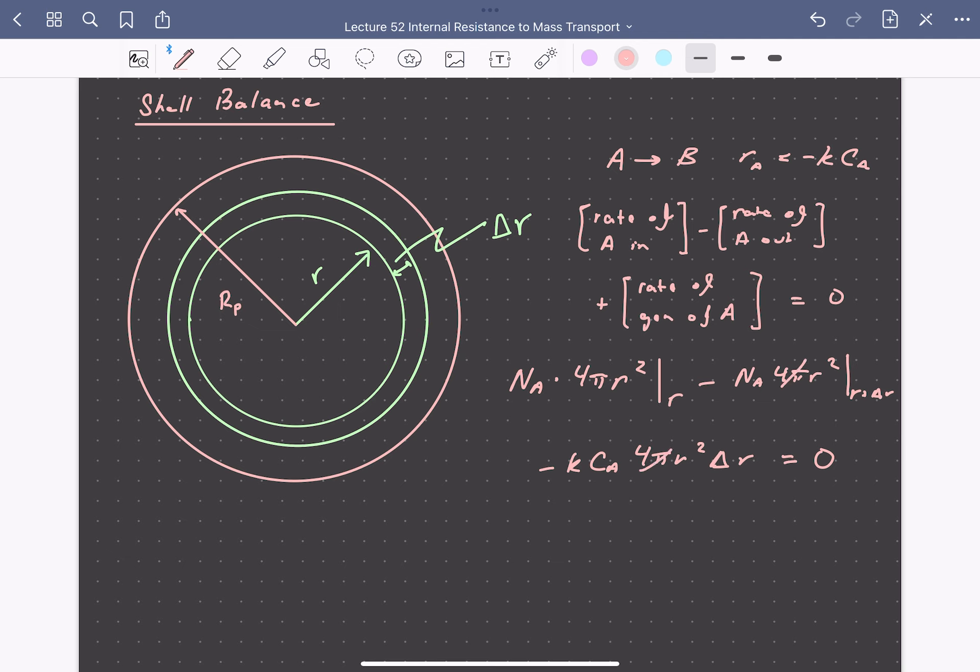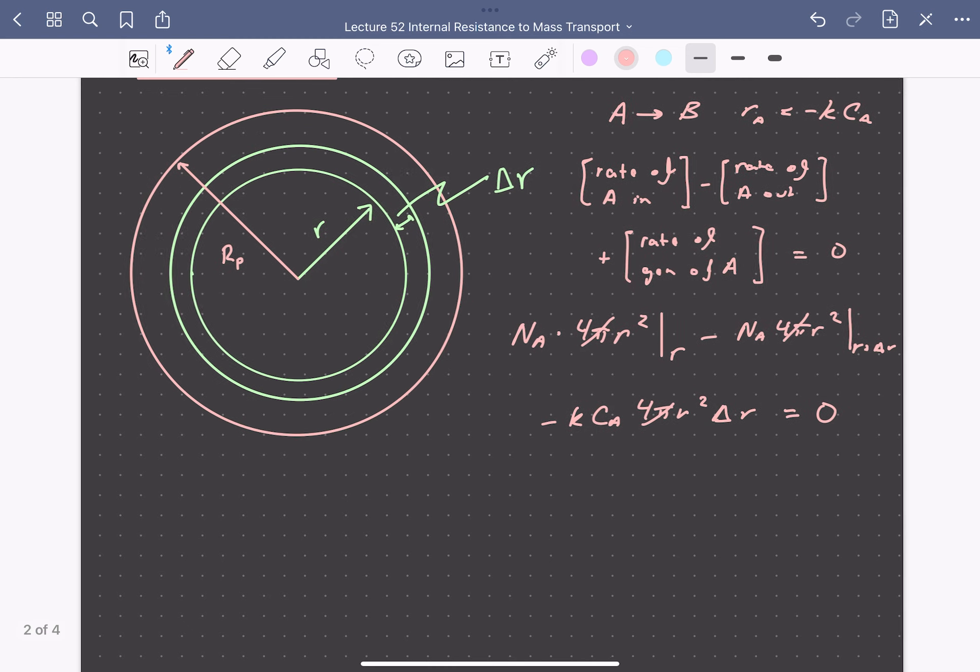So our 4π here will cancel. Our R will not, since it's evaluated at different positions. So we can divide our whole expression through by delta R and take the limit as delta R goes to zero. So as this shell becomes infinitesimally thin, this leaves us with the following differential equation.